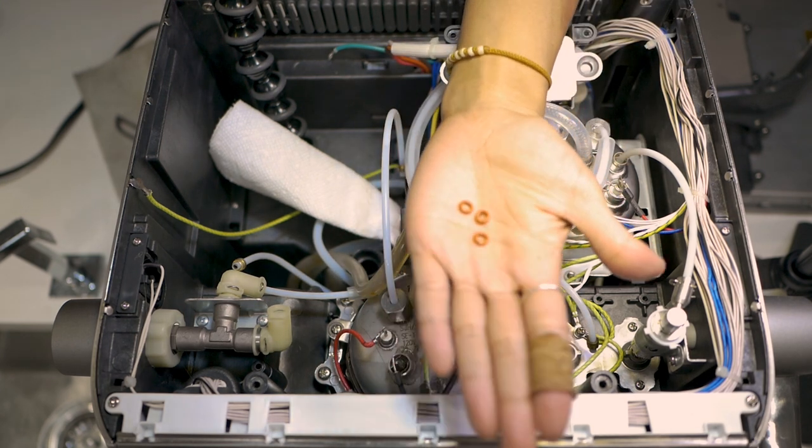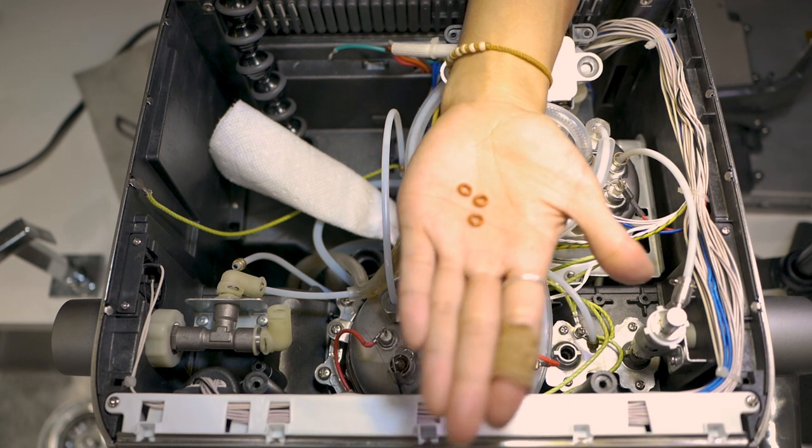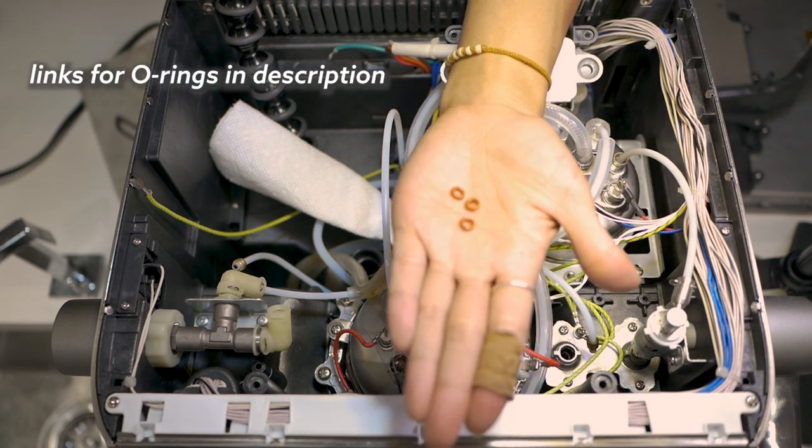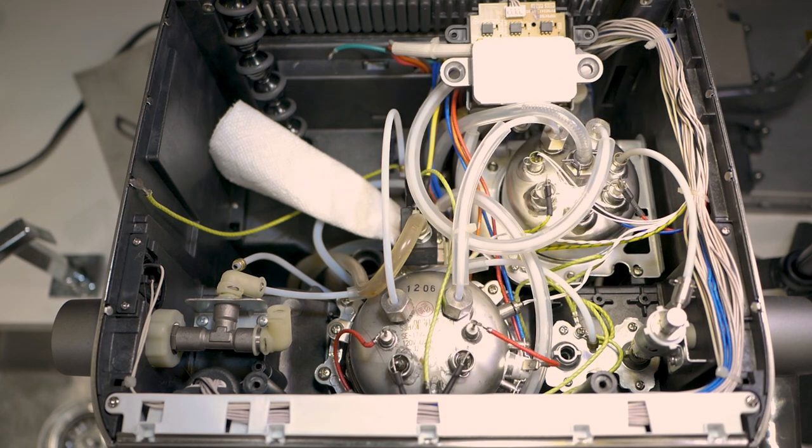So while you're here, I would just inspect the o-rings. Make sure they still look okay. There's no cracks or anything. These you may need to replace with time. And this is essentially where you would find them. Mine look good. I was careful when I was removing them. So I'm going to put them aside now.